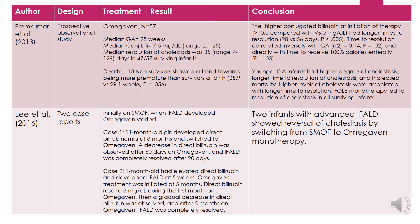I want to go over a few trials that led to the approval of Omegaven. In 2013, Prem Kumar et al.'s prospective observational study showed that the use of Omegaven in 47 of 57 infants with a median gestational age of 28 weeks and median conjugated bilirubin level of 7.5 had a resolution of cholestasis at a median day of 35. The 10 non-survivors showed a trend towards being more premature than those who survived at birth.